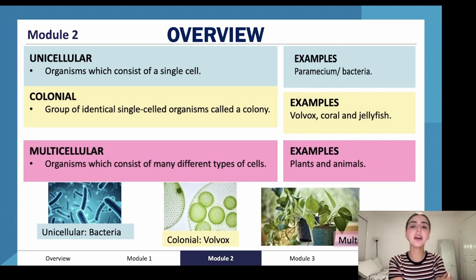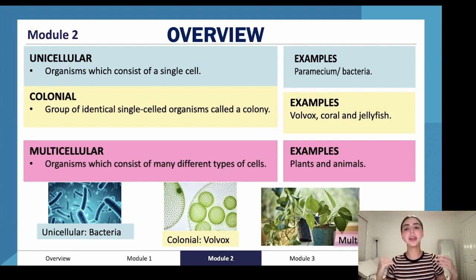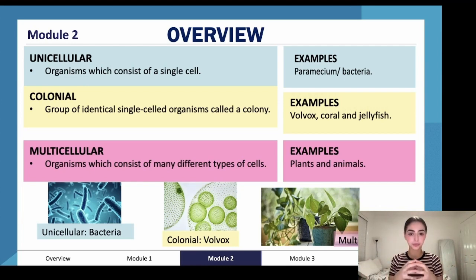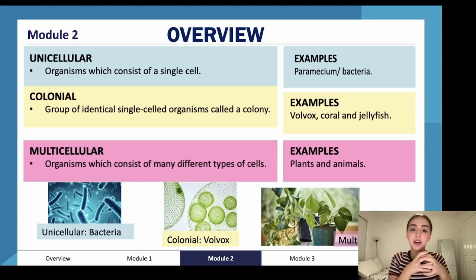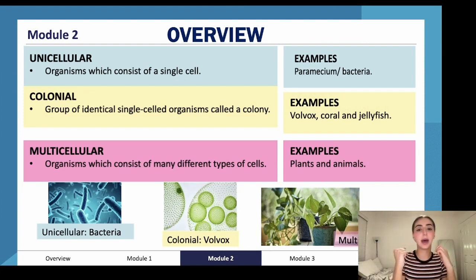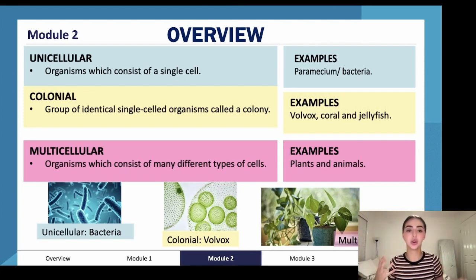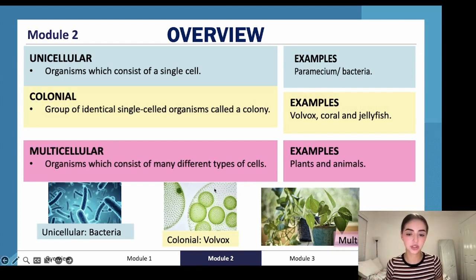Colonial organisms are the next step up. Colonial means they are still unicellular, except they live in a colony. Why? Because there's power in numbers — they're more powerful together than on their own and can fend for each other. Volvox, coral, and jellyfish are all examples of this, as we can see here.